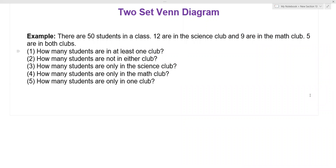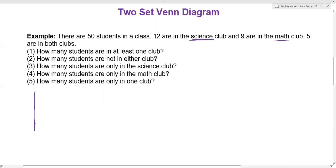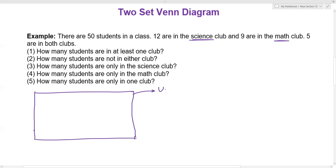Before we answer any of these questions, we want to first illustrate the relationship of these sets with a Venn diagram. Because there is science and there is math, there are two collections of students — two sets of students. So we know that we're dealing with a two-set Venn diagram. As usual, we are going to draw a big rectangle first, and this rectangle is going to represent everything — my universe of students.